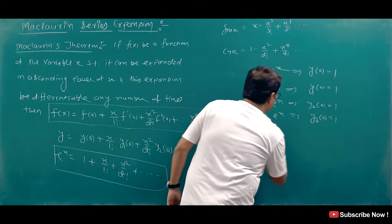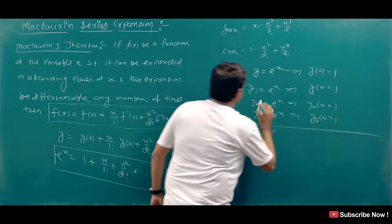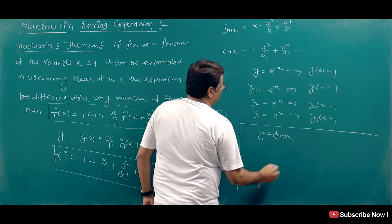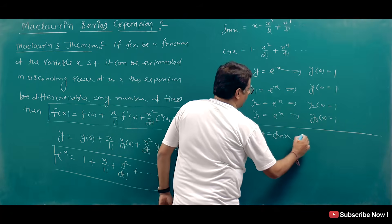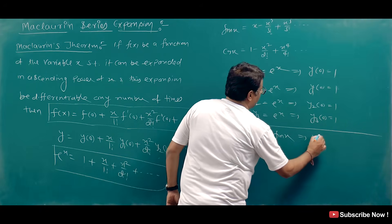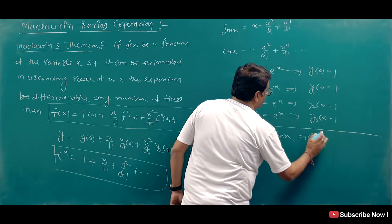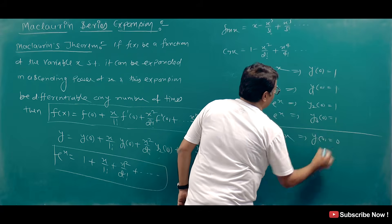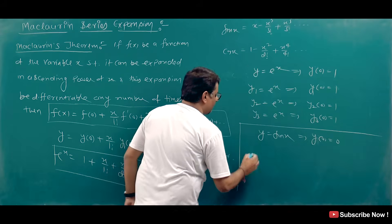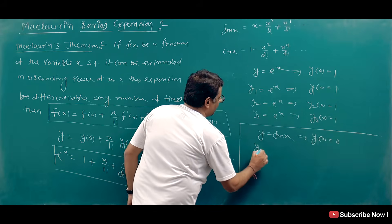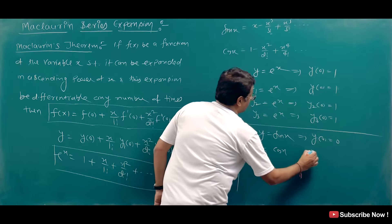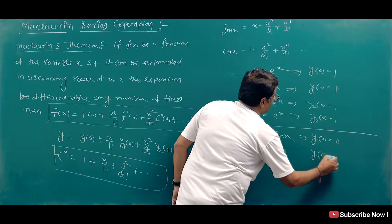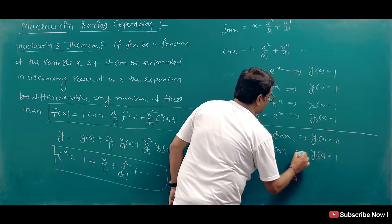For the sin x series, we choose y = sin x. We will find y at x = 0, and y₁ = cos x, so y₁ at x = 0 equals 1.